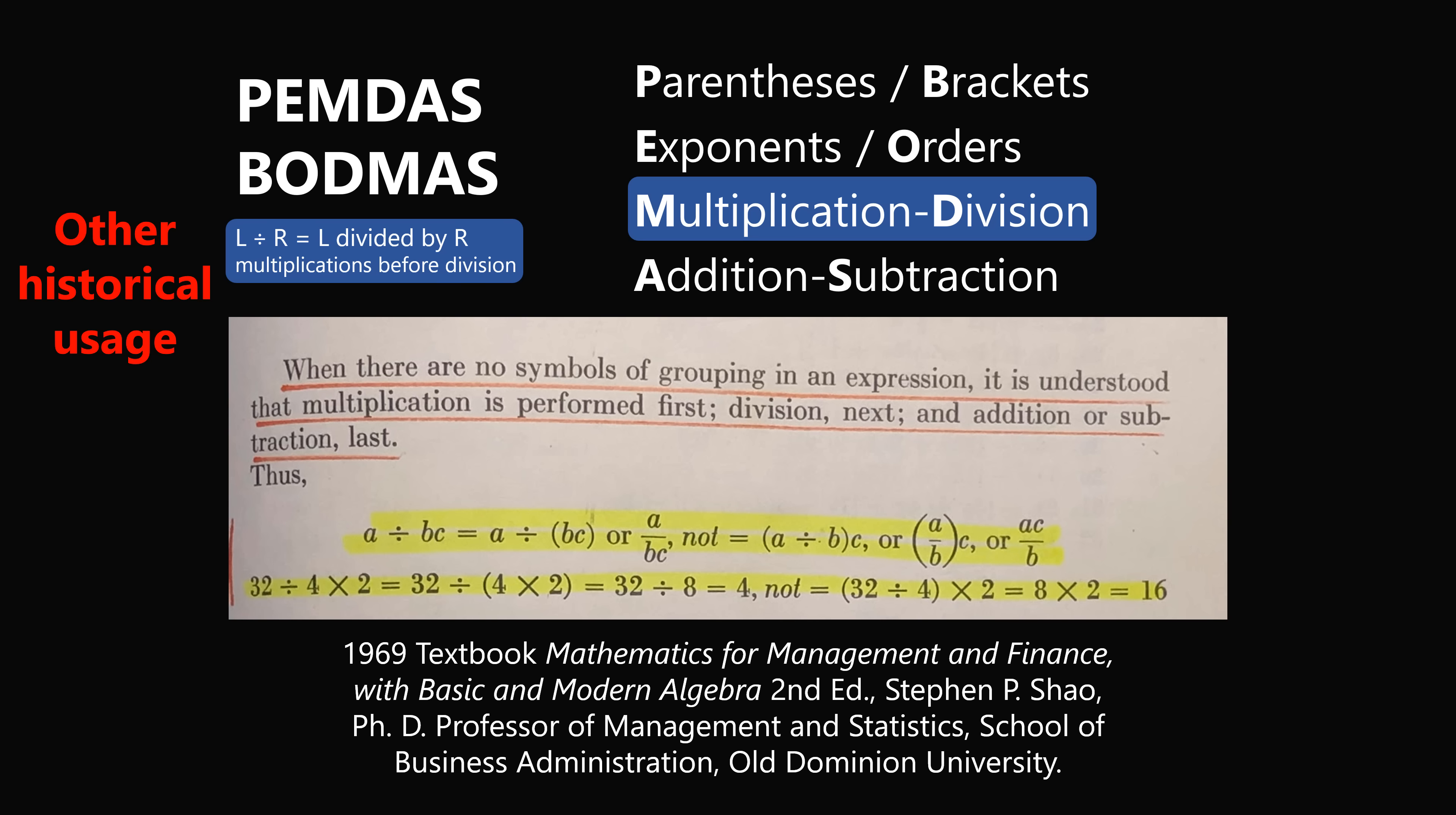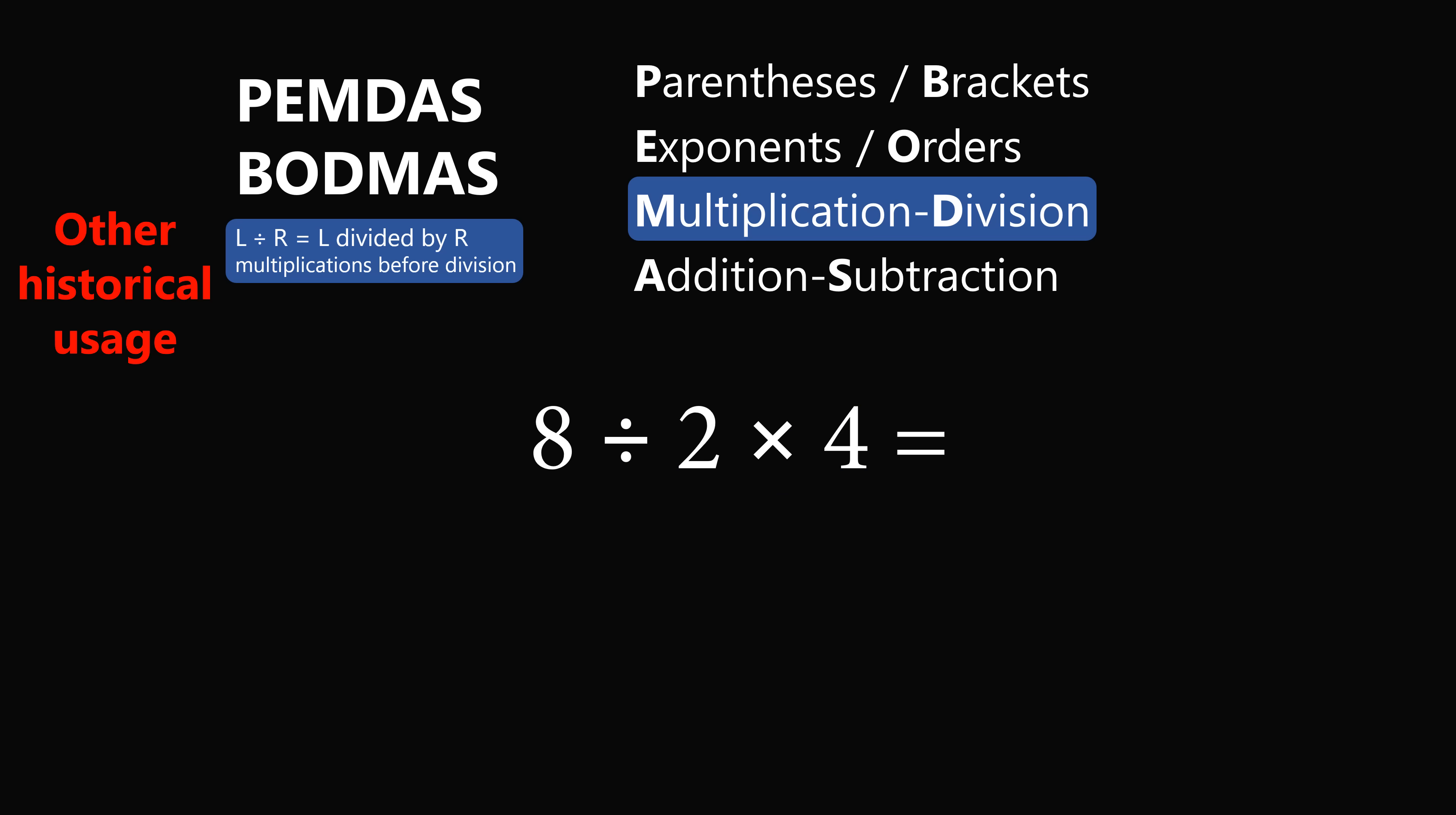So people who said they learned it another way, it is definitely possible. You should never dismiss that they did learn it this other way. So what would be the answer by this convention? We would need to do 2 multiplied by 4 first, and that gives 8. Substituting that in, we have 8 divided by 8, which is equal to 1. And that would be the answer according to this interpretation of the order of operations.